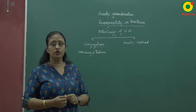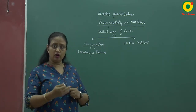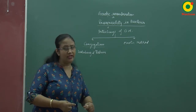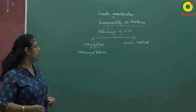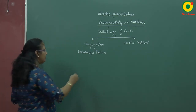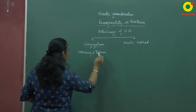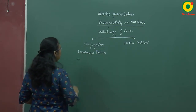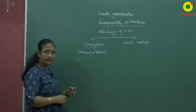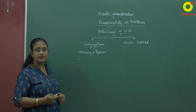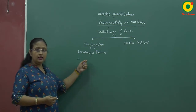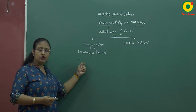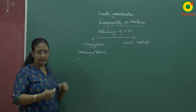The conjugation tube is formed by the sex pili. For conjugation to occur, the two cells must come into close contact — cell-to-cell contact is very essential. Those cells come into close contact with each other.